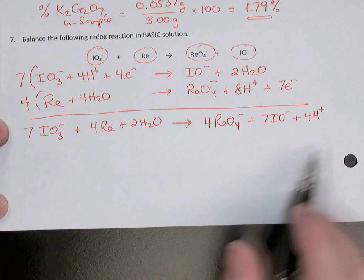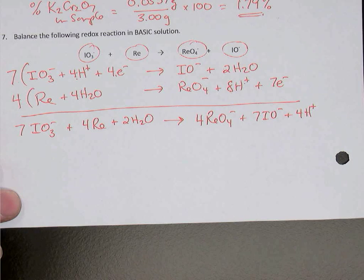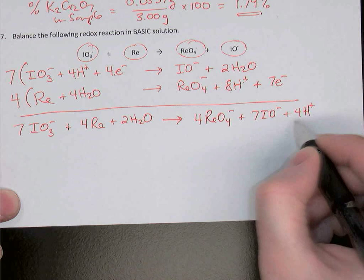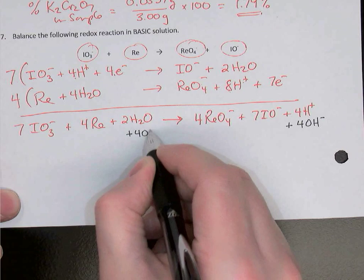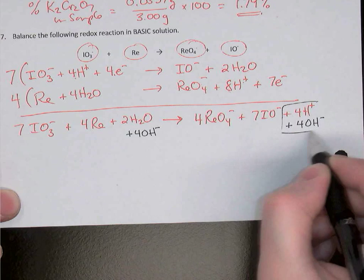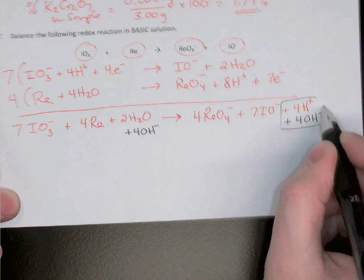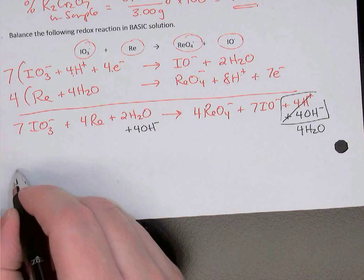To fix it for basic solution, we look at the four hydrogen ions and neutralize them using four hydroxides — an equal amount. To keep the equation balanced, we also add those four hydroxides to the left-hand side. When you combine four hydrogens with four hydroxides, they create four water molecules.